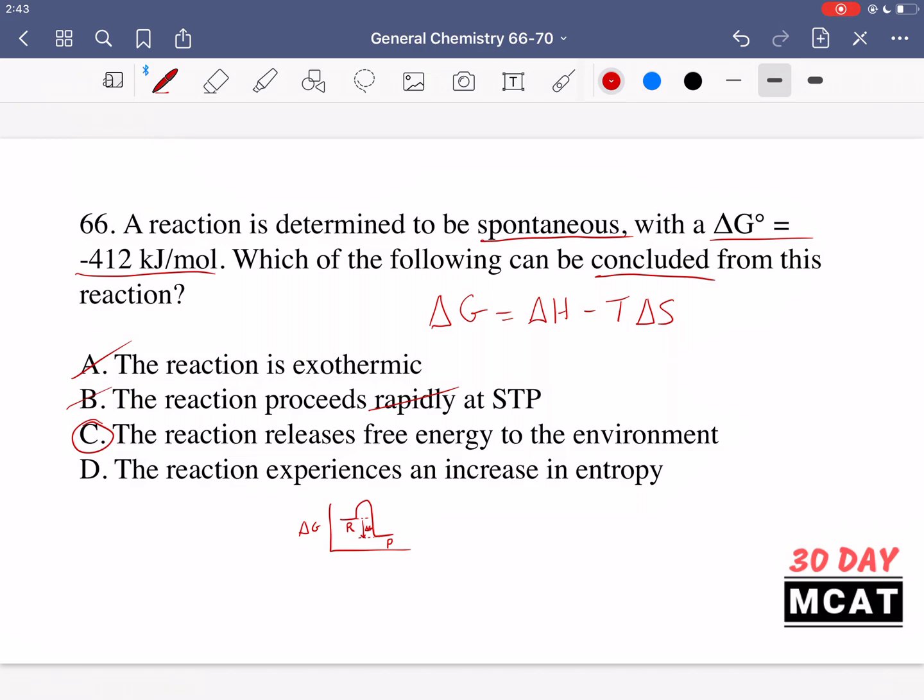Now finally, option D is saying the reaction experiences an increase in entropy. Just like with option A, this is not something we can conclude. Sure, if there's an increase in entropy, this would make it more likely that it's a reaction which is spontaneous, but it depends on the specific reaction.